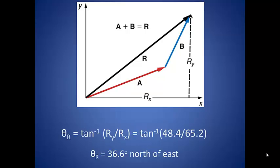Now we also want to know the angle. So what direction were we traveling in relation to our origin? The angle is equal to the tangent of the two sides of our triangle. Our y vector is 48.4 meters. Our x vector was 65.2. Our resultant vector is 36.6 degrees north of east.